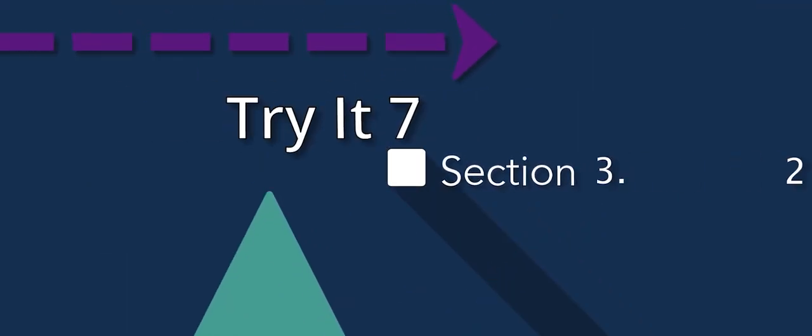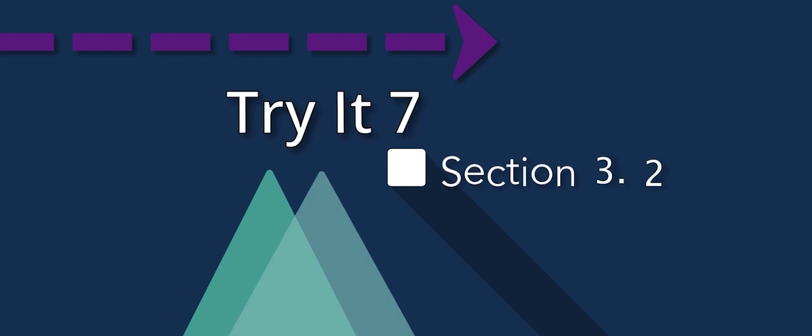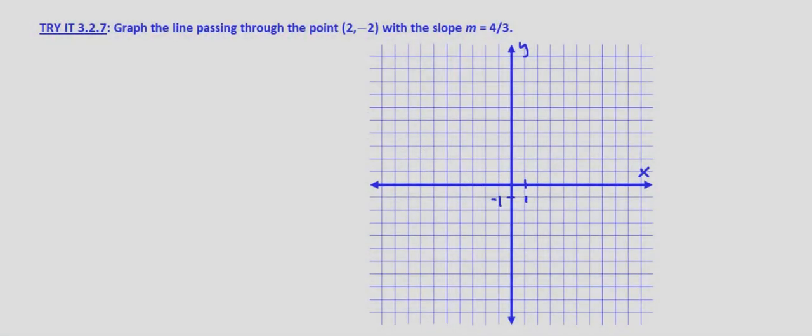So now we're looking at graphing lines given a point and the slope. Later on we'll look at how to find the equation for a line that goes through a specific point and a slope and then we can just graph the equation.